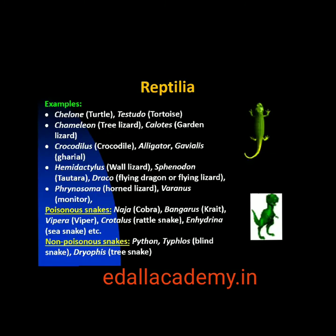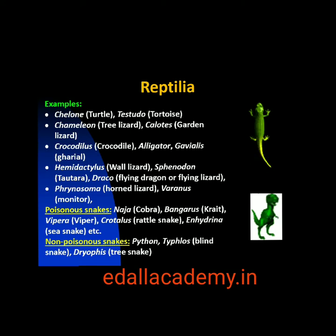Examples of Reptilia: Chelone (turtle), Testudo (tortoise), Chameleon (tree lizard), Calotes (garden lizard), Crocodilus (crocodile), Alligator (alligator), Hemidactylus (wall lizard). Poisonous snakes: Naja (cobra), Bangarus (krait), Vipera (viper).